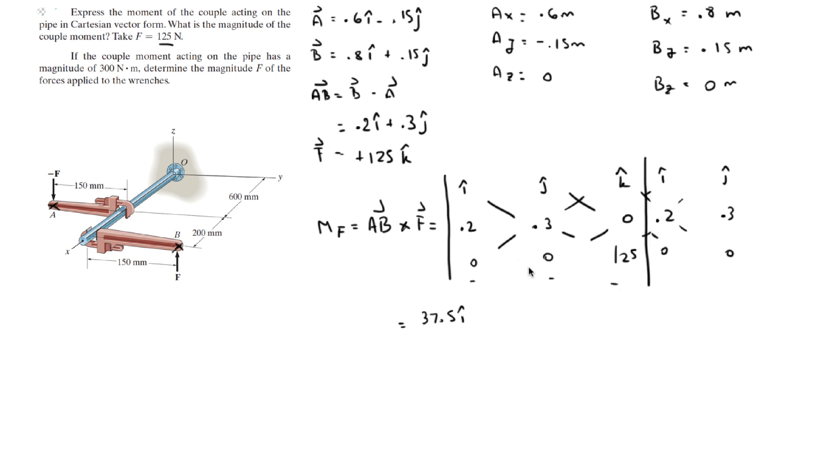And you do your negative diagonals, which is negative, negative, negative. The first one is 0, the second one is 0, and the third one is negative 1.25 times 0.2 times J, which gives you negative 25J.